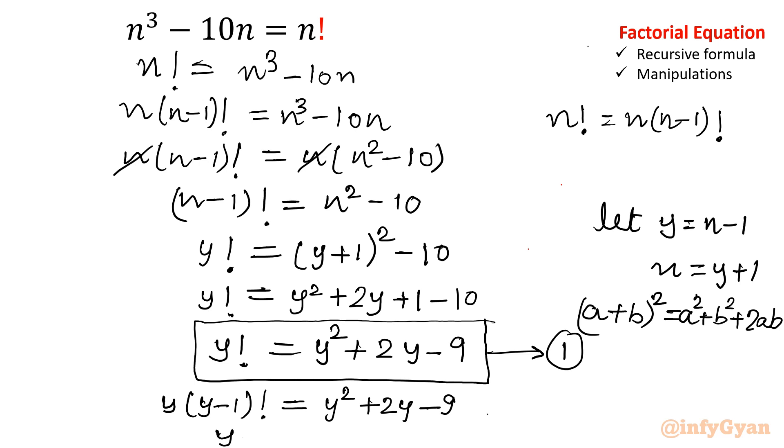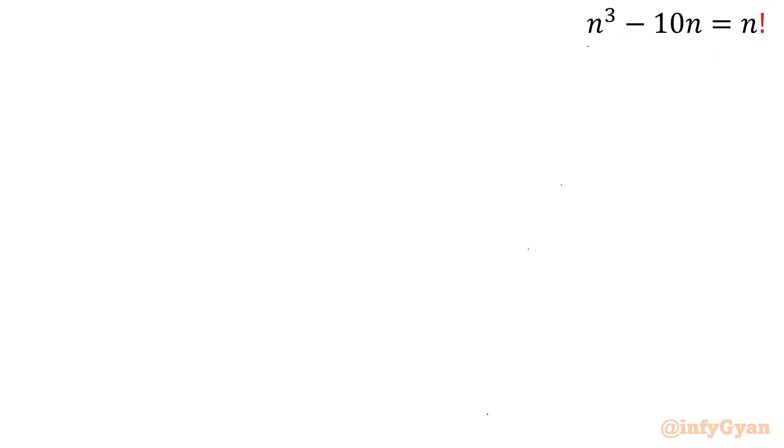Now divide both sides by y. So once I divide both sides by y, then it will be (y-1)! equal to y + 2 - 9/y. This is our equation: (y-1)! = y + 2 - 9/y.